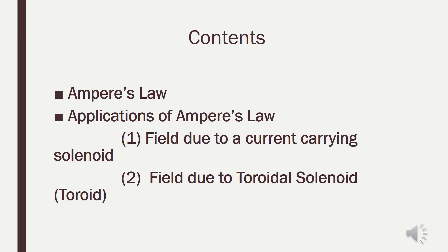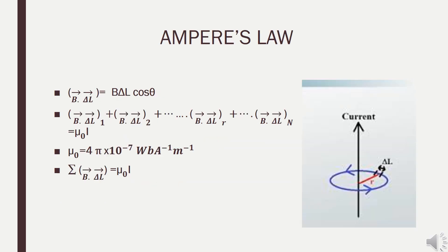Today we will discuss Ampere's Law and its two applications: field due to a current carrying solenoid, and field due to a toroidal solenoid. Ampere was a scientist who performed many experiments on current carrying conductors and the magnetic field produced around them. From these experiments he derived results which we study in the form of Ampere's Law. The importance of Ampere's Law in magnetic fields is exactly like Gauss's Law in electric fields — just as we use Gauss's Law to calculate electric field intensity, we use Ampere's Law to calculate magnetic field intensity.